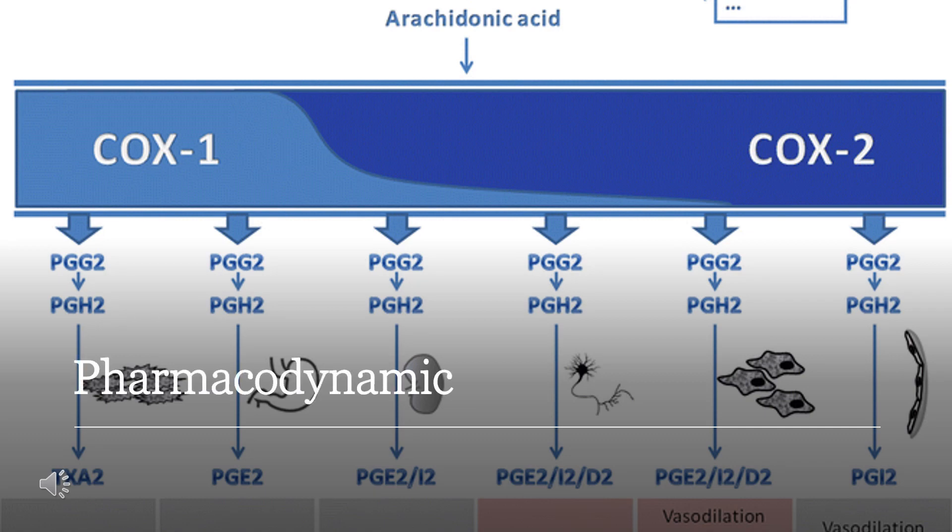Naproxen is an established non-selective NSAID useful as an analgesic, anti-inflammatory, and antipyretic. Similar to other NSAIDs, its pharmacological activity can be attributed to the inhibition of cyclooxygenase (COX), which in turn reduces prostaglandin synthesis in various tissues and fluids including the synovial fluid, gastric mucosa, and blood.